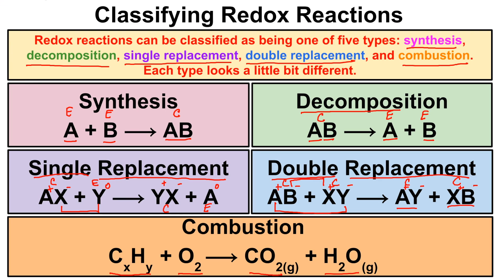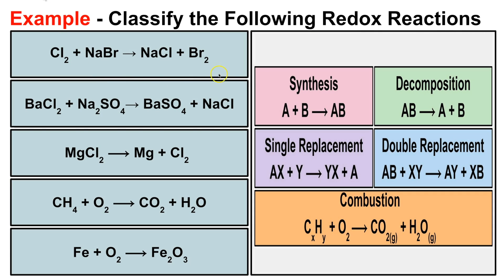Let's go through some examples together, then you can try some on your own. We need to classify reactions as synthesis, decomposition, single replacement, double replacement, or combustion. The first one shows a compound reacting with an element, producing a compound and an element — Na and Cl bond together, and Br₂ is left by itself. These reactions are left unbalanced; we don't need to balance them for classification purposes. This is a single replacement reaction.